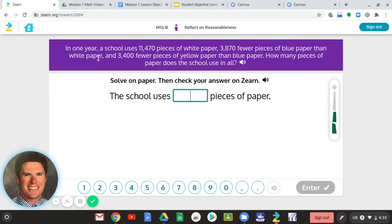It says, in one school year, a school uses 11,470 pieces of white paper, 3,870 fewer pieces of blue paper than white paper, and 3,400 fewer pieces of yellow paper than blue paper. How many pieces of paper does the school use in all?